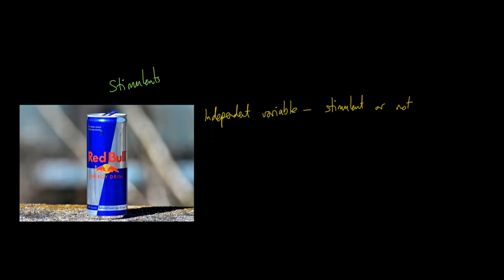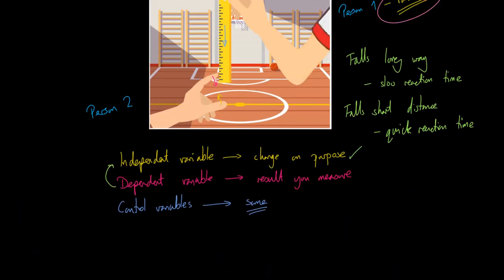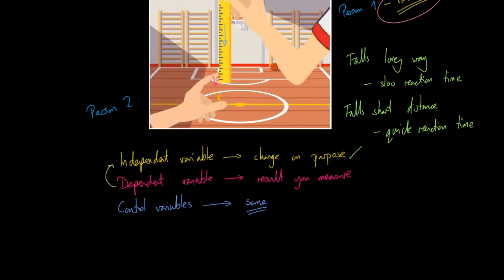The dependent variable, with all of these different variations, is going to be the reaction time. Now I must just quickly address here: you might be sitting there thinking, 'whoa, hang on a second, you're talking about measuring a distance on the ruler, how does that equate to time?' Well, what you do is you take that result and you've usually got available some sort of conversion chart—you know, 10 centimeters equals that kind of time—so you can convert that distance into a time.